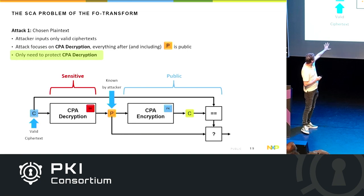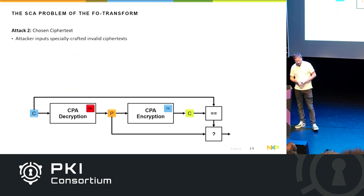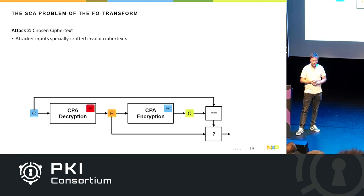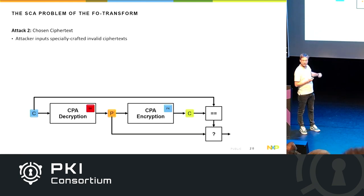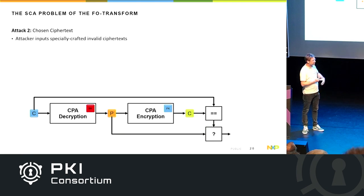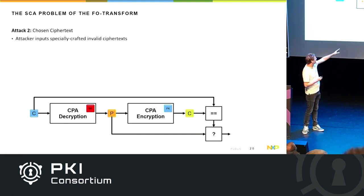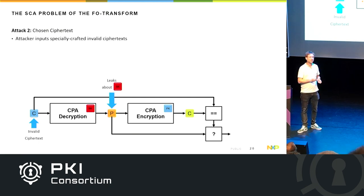You only need to protect the CPA decryption. But now consider a chosen-ciphertext attack: the attacker carefully chooses a ciphertext that may not correspond to any meaningful plaintext, crafted so that during CPA decryption with your secret key, measuring power leaks information. But now the resulting plaintext is also secret — since you started from a chosen ciphertext, not a known plaintext — so computations on that plaintext during re-encryption may also leak information about the secret key.